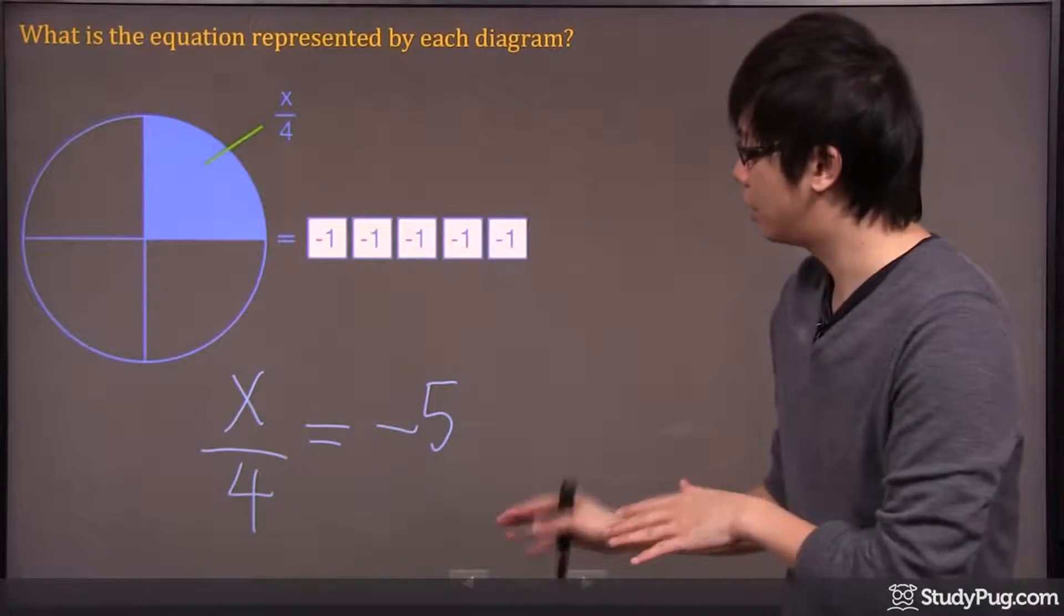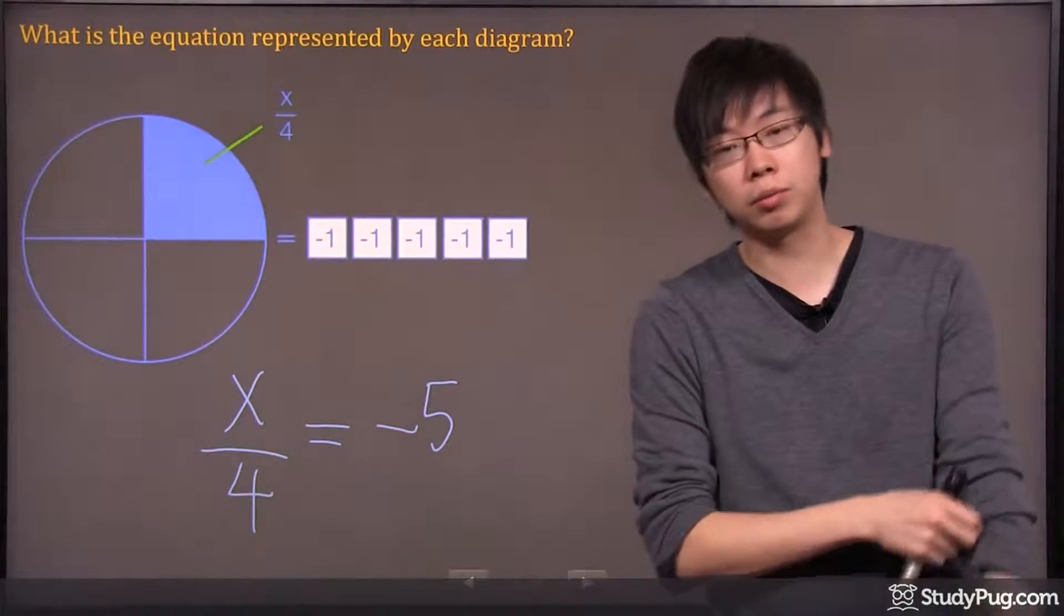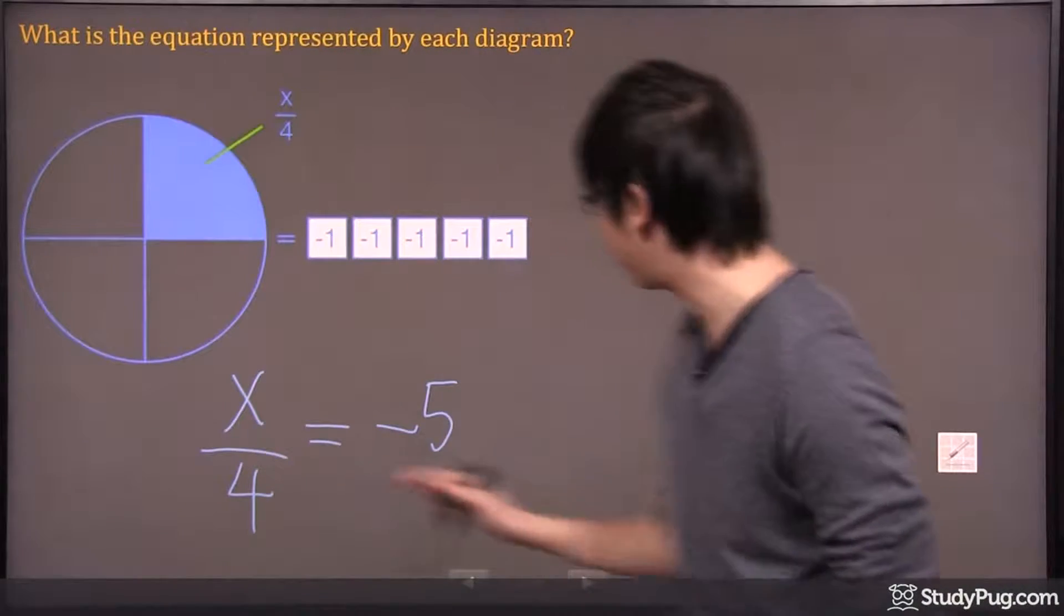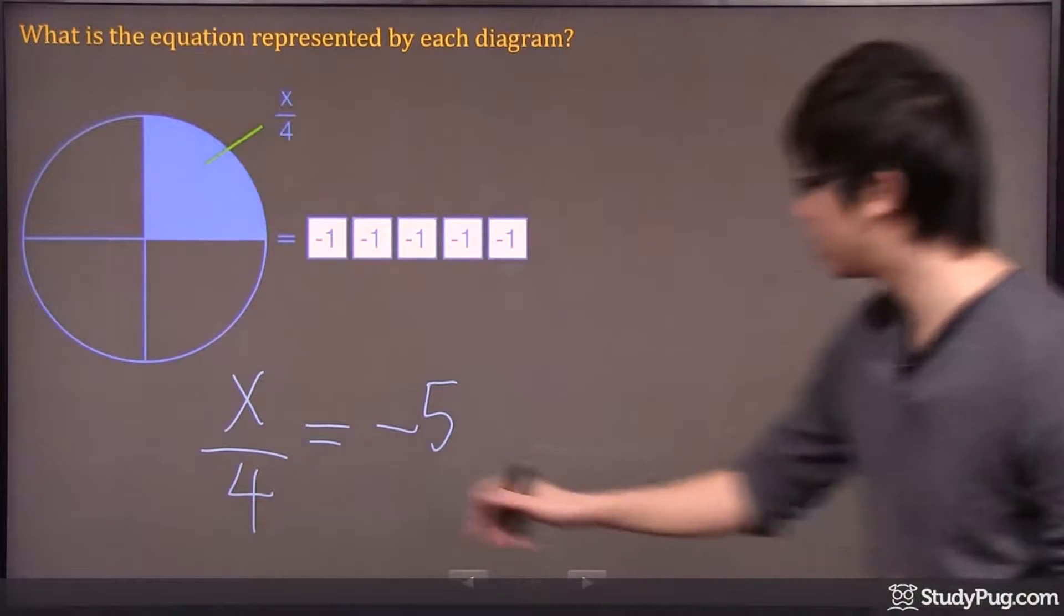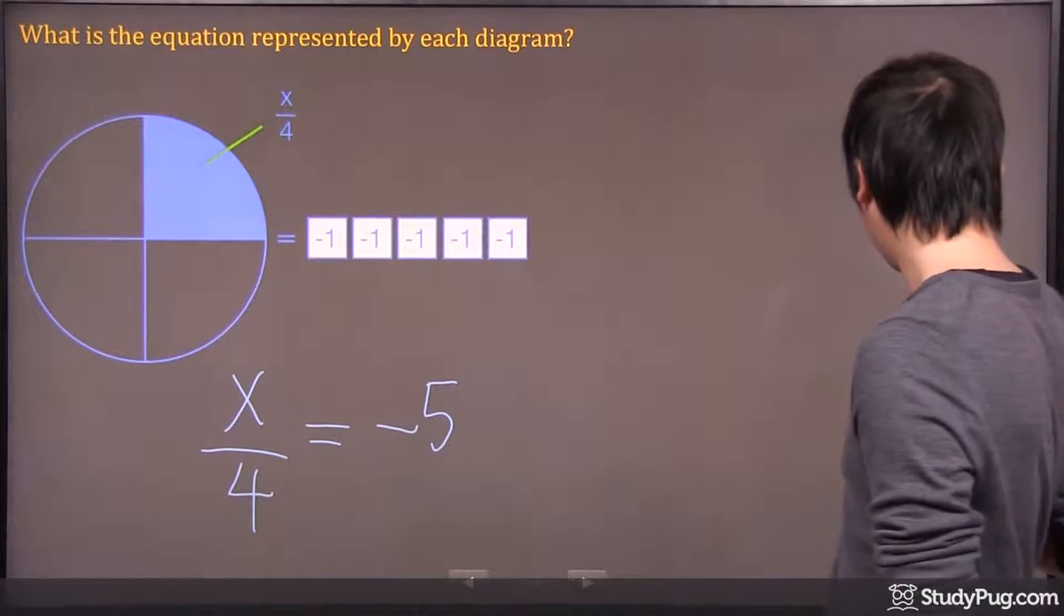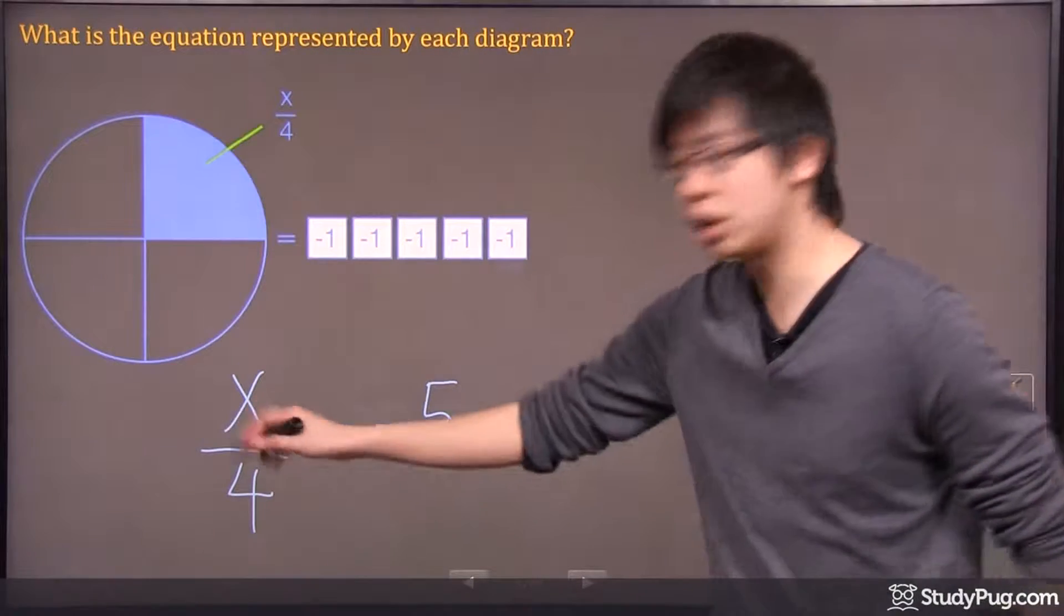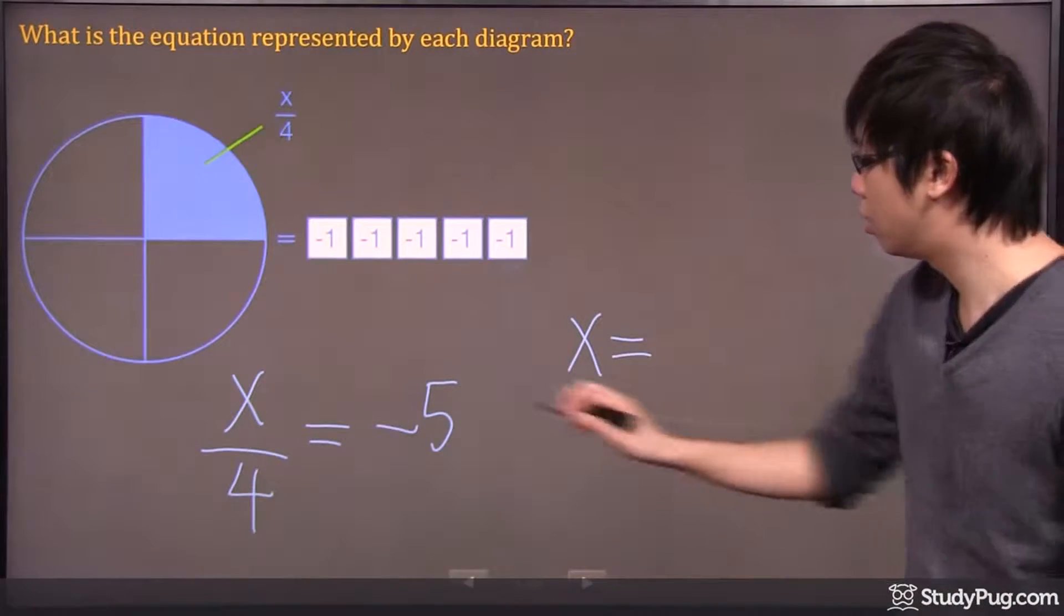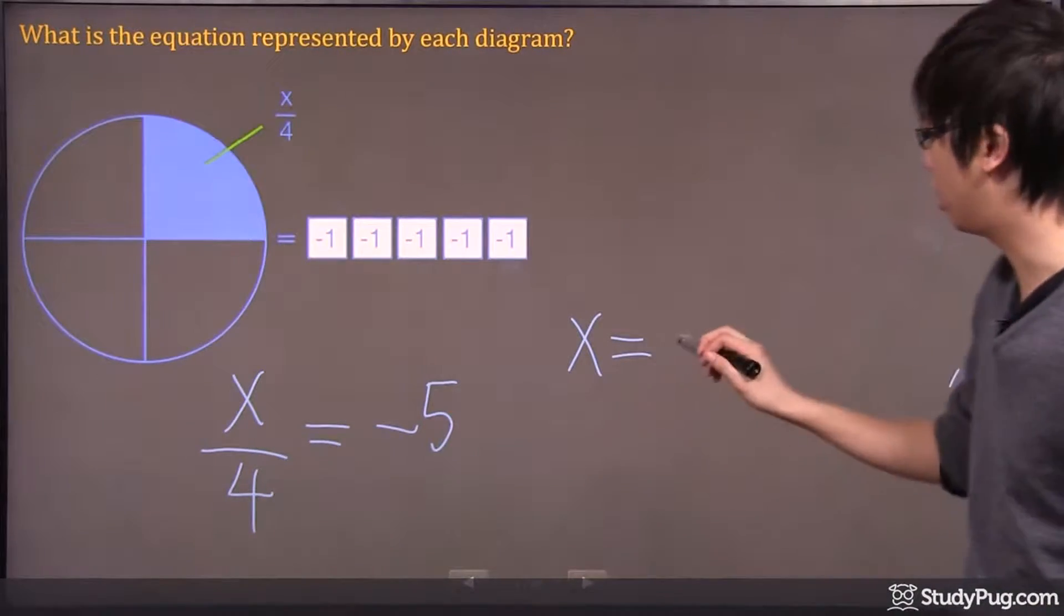So if you're going to solve this, you just have to multiply the 4 to both sides. You got to times 4 to both sides. If you times by 4, then we'll use a different marker... it's not functioning, I think. But if you times by 4 to each side, guess what happens? You get x equals to 4 times 5 gives you negative 20.